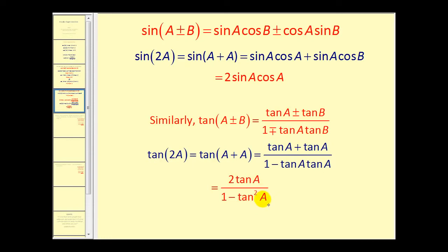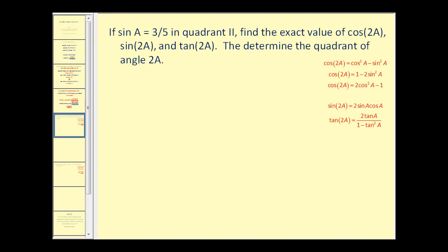Let's take a look at a couple of problems. Here we have sine A equals three fifths in quadrant two. We want to find the exact value of cosine two A, sine two A, and tangent two A, and then determine the quadrant of angle two A. Looking at the identities, we can find cosine two A with just the given information since we have sine A.